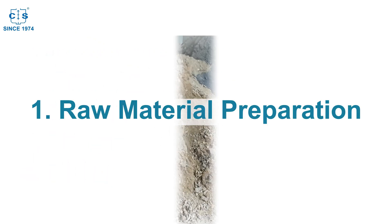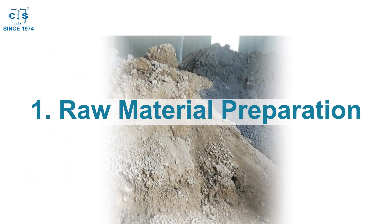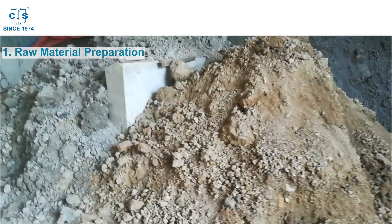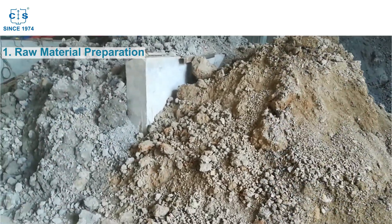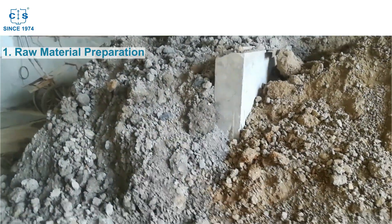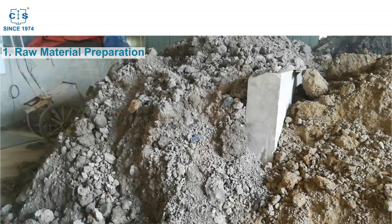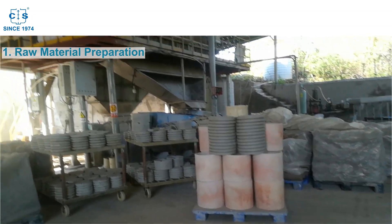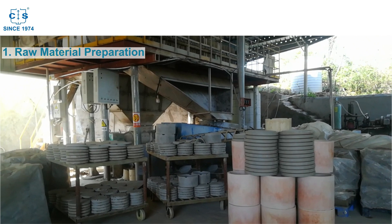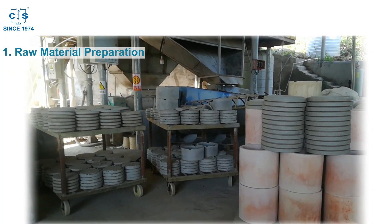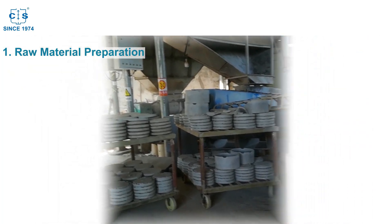First, raw material preparation. The first step in the manufacturing process is raw material preparation. The raw materials are mixed with water and additives to form a slurry. Then the moisture is removed from the slurry and it is extruded into clay.